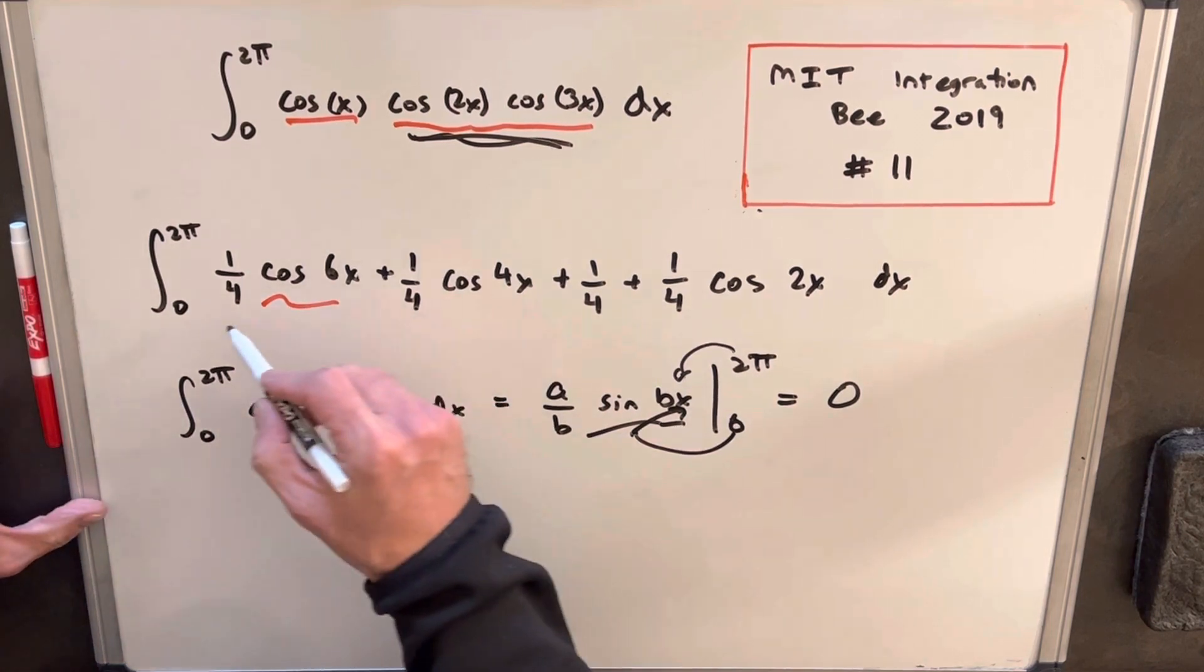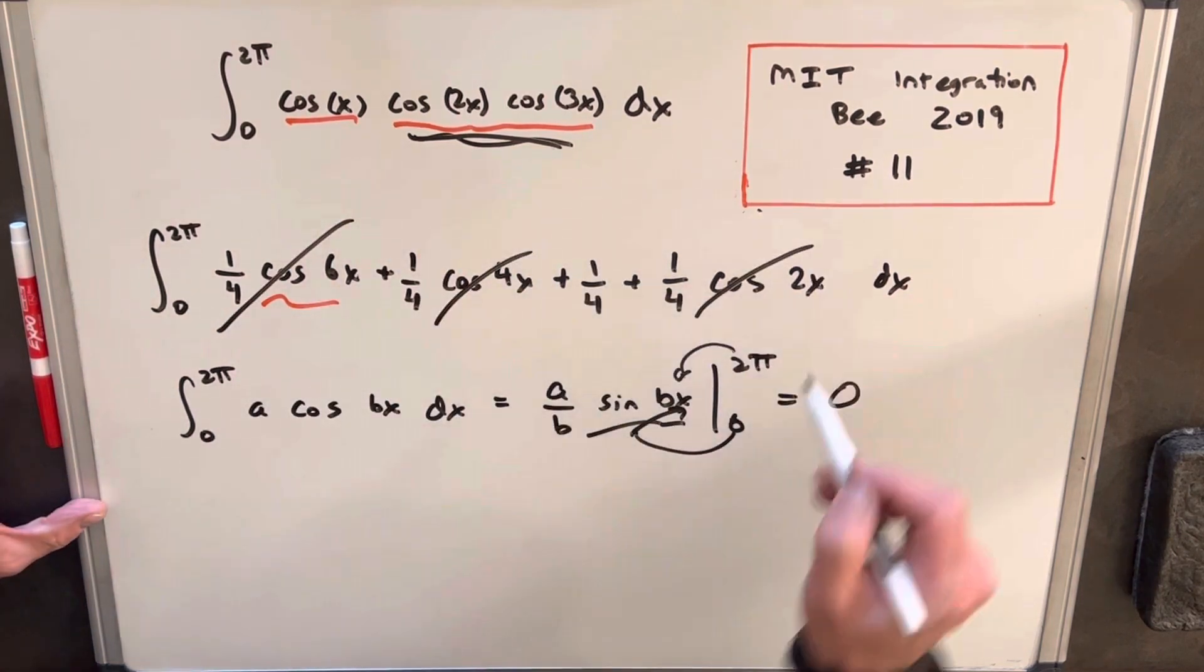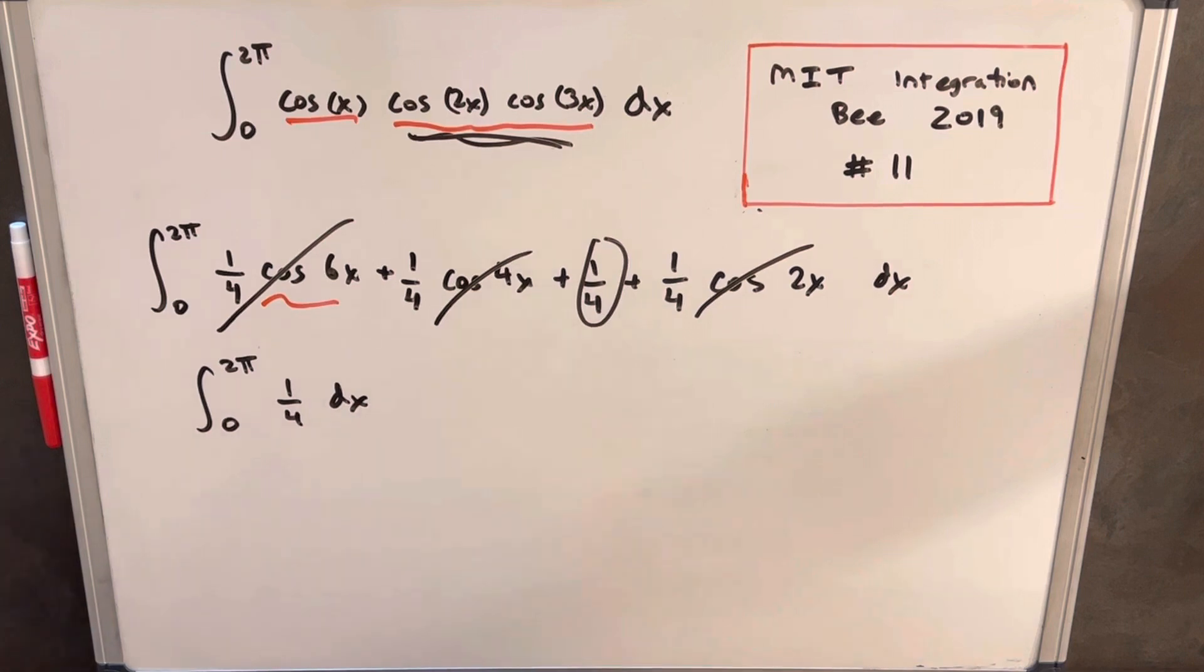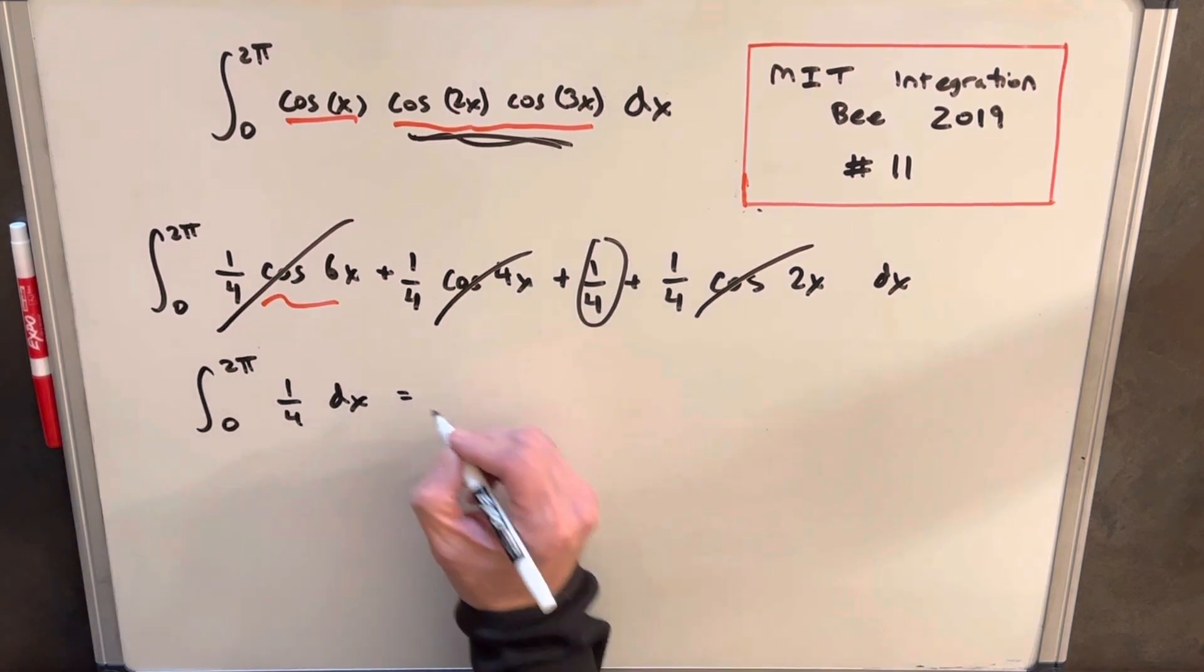So what that's going to do is it's going to allow us to ignore this piece, this piece, and this piece, and just focus on the integral of one-fourth because everything else is 0. So you can see all we need to do now is just integrate one-fourth. So this is going to be really easy.